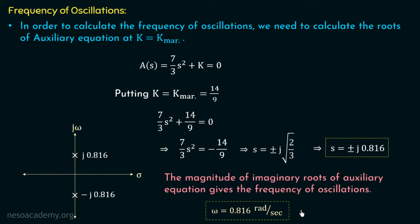To summarize: the roots of the auxiliary equation at k = k_marginal were s = ±j0.816, and the magnitude 0.816 gives the frequency of sustained oscillations as 0.816 radian per second. Up to this lecture, we have discussed almost all the concepts needed for the RH criteria. From the next lecture, we will discuss problems based on RH criteria. Thank you for watching.